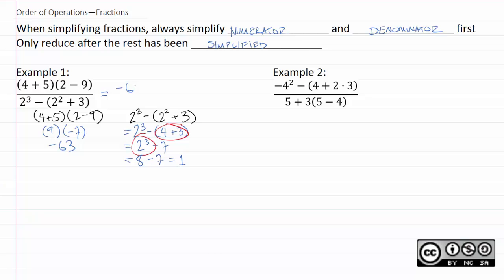And 8 minus 7 is 1. So, this entire fraction, when we put this all together, is negative 63 divided by 1, which is very easy to simplify, as that is just negative 63.